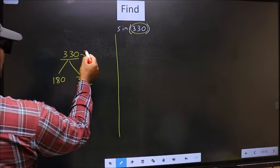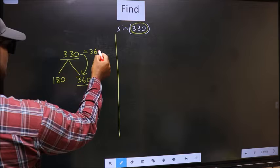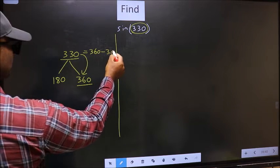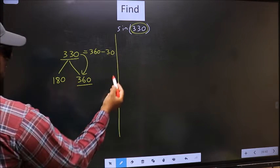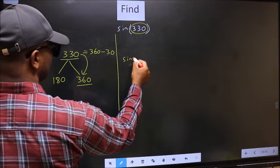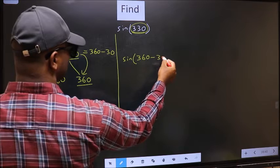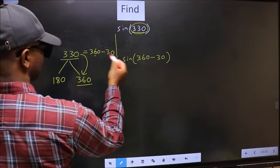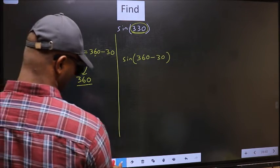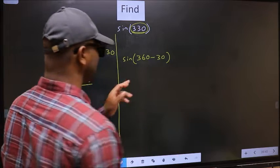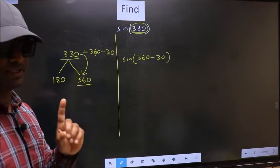So 330 now should be written as 360 minus 30. So this will become sin. In place of 330, now we should write 360 minus 30. This is your step 1.